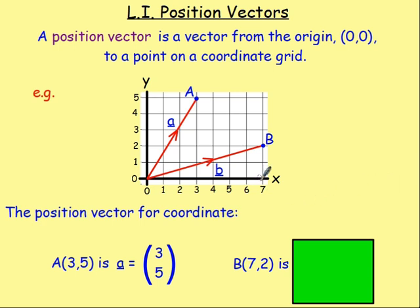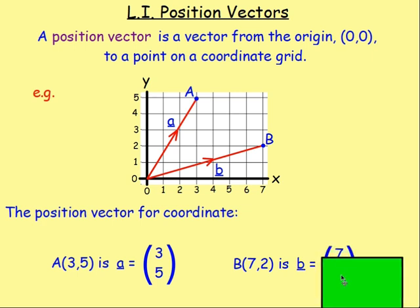And for B, it has the coordinates 7, 2. We'll come along 7 and then up 2. So the vector to go from the origin up to point B, this vector has been drawn in, and we have called that vector B. So again, it's a lowercase letter, underlined. But the way we write that, we don't write 7, 2 with the brackets when it's written horizontally. We write it vertically with the x component being at the top and the y component being below that. So we've got 7, 2 for the vector B.